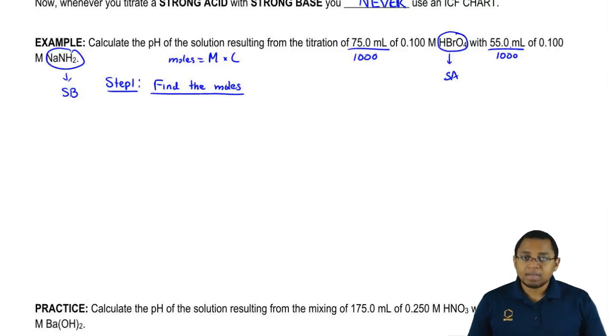Remember for the base, you're always supposed to check how many OH-, NH2-, H-, and O2- you have to get the correct concentration. Here we only have one NH2 so we don't have to worry about multiplying the concentration by anything. We can keep it as it is.